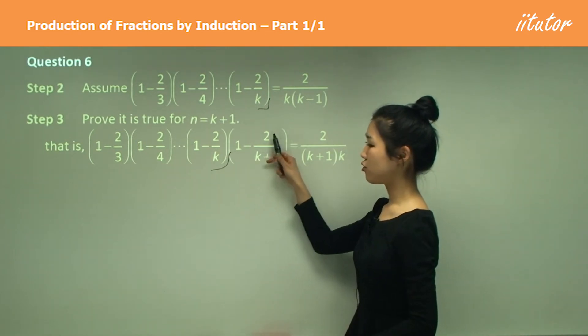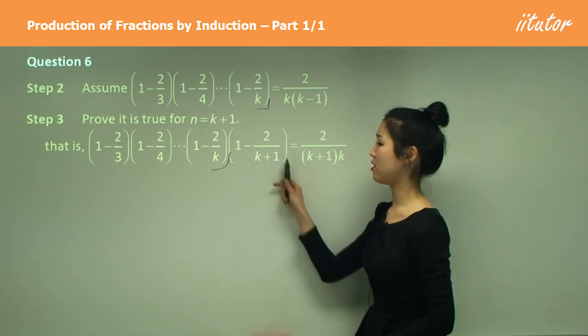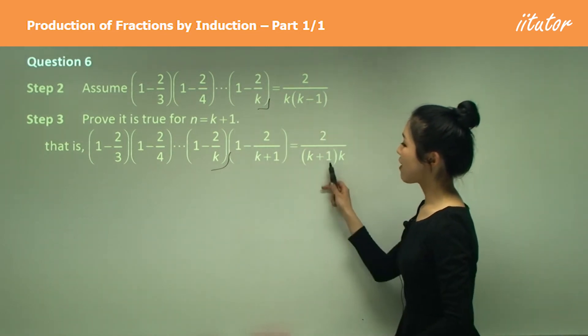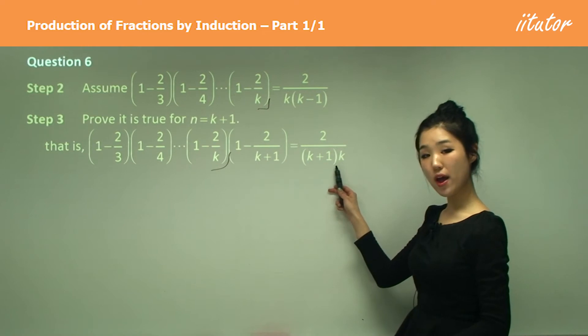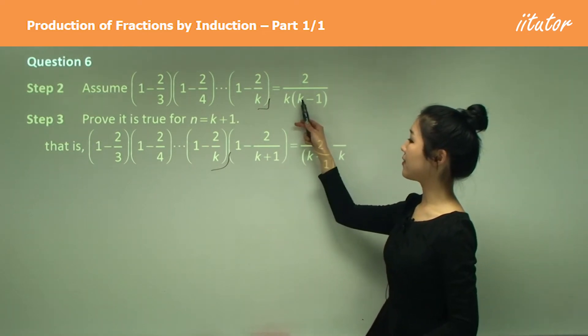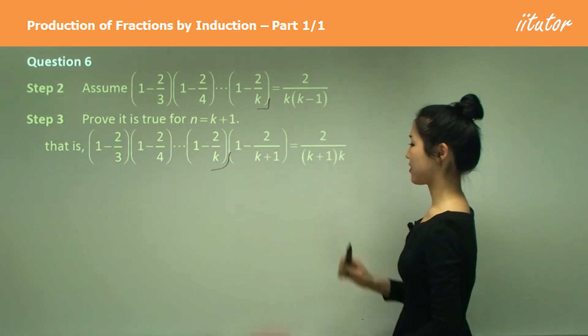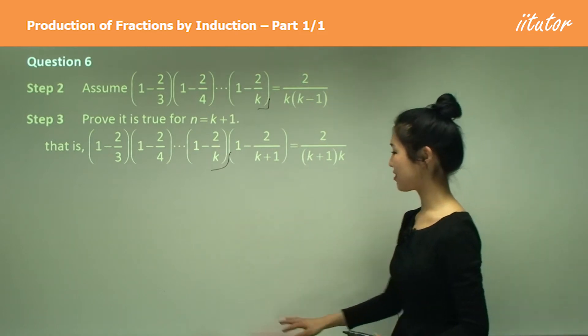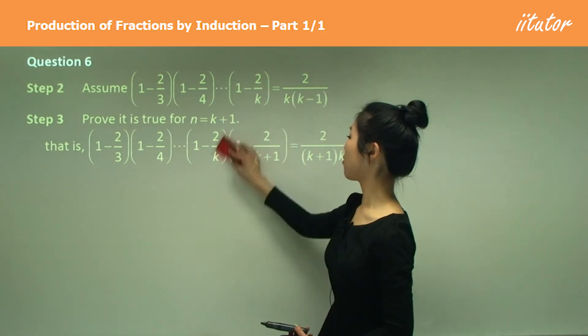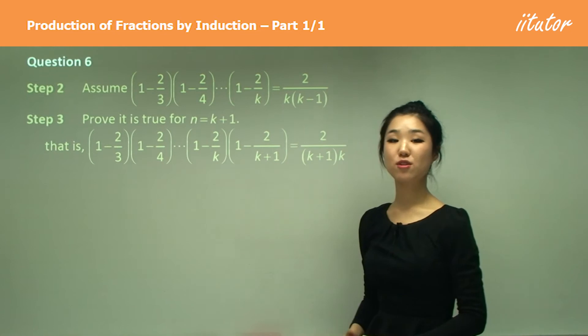So we have 1 minus 2 over k plus 1, which is an additional 1. And of course our right hand side, we're going to make k, k plus 1 and k is k plus 1. So k plus 1 minus 1 is just k. So we've got the left hand side and right hand side all fixed up. So now we just need to prove it.